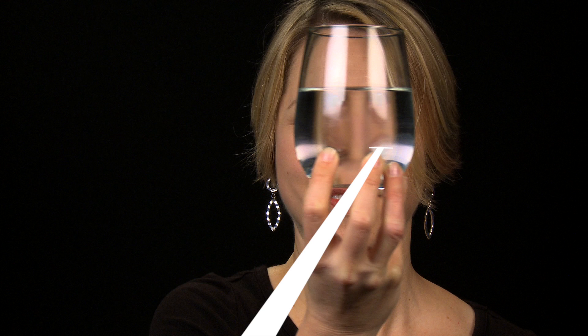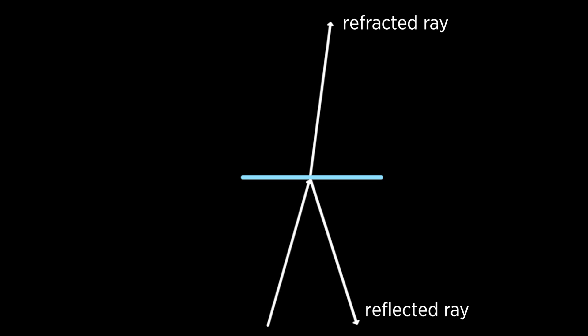If the object is partially transparent, like this glass cup, the ray tracer can do a similar thing and launch a ray in the refracted direction. Refracted rays pass through an object, while reflected rays bounce off of them.